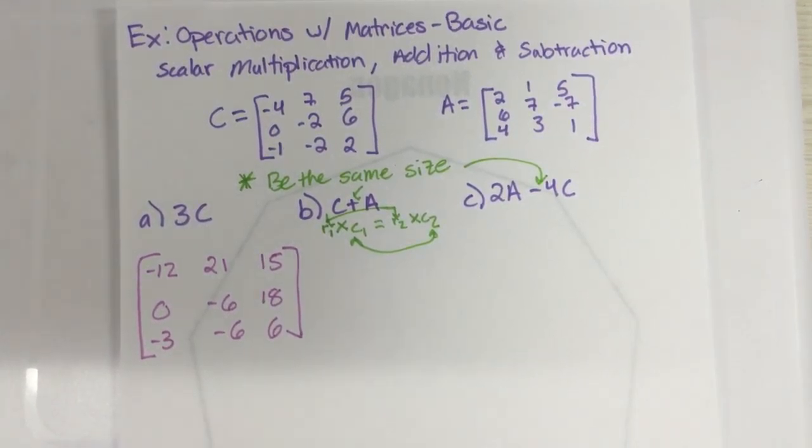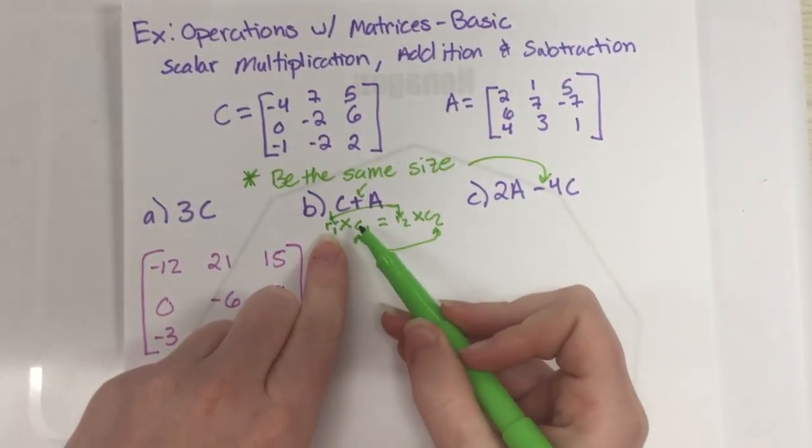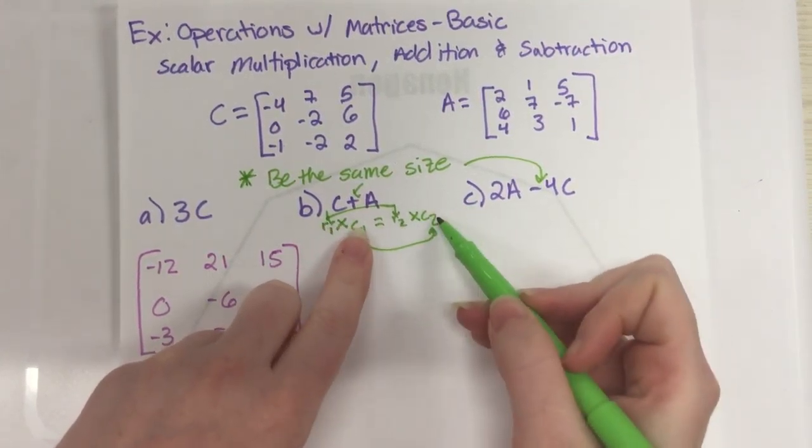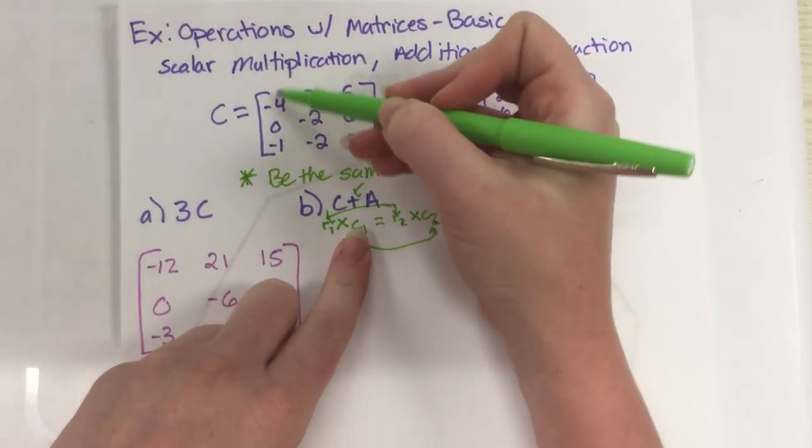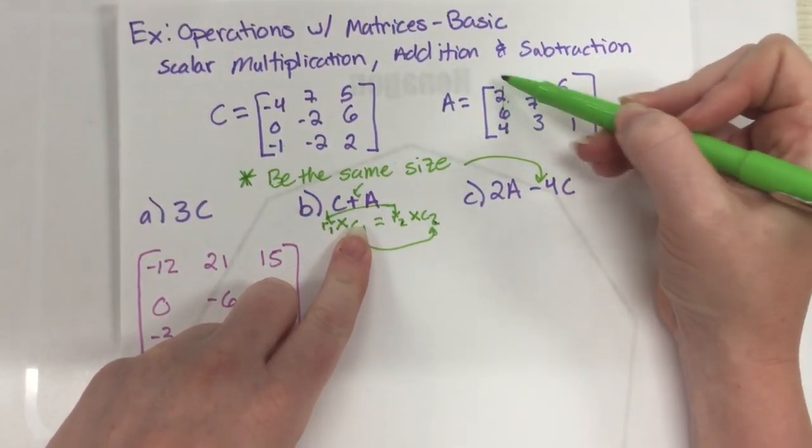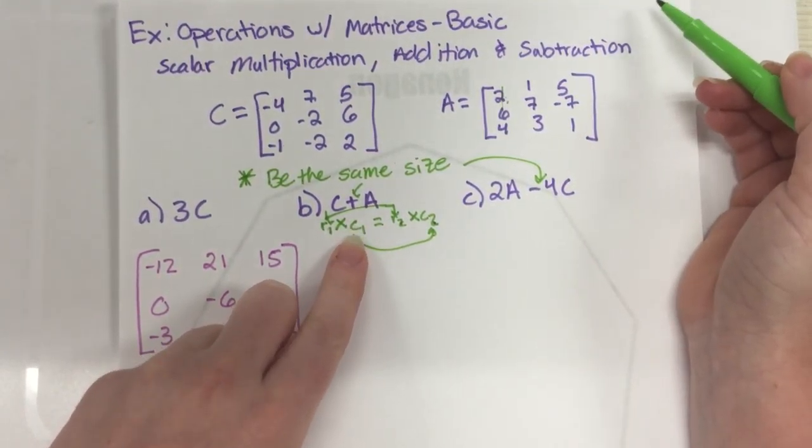They don't have to be a square matrix. They don't have to have the rows and columns being equal, but the rows need to be the same and the columns need to be the same. And so this is a 3 by 3. This is a 3 by 3. So we're good to go.